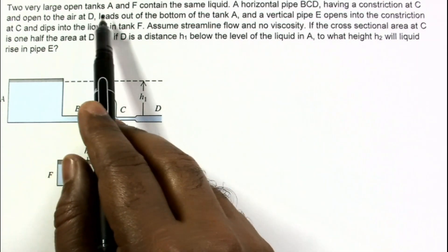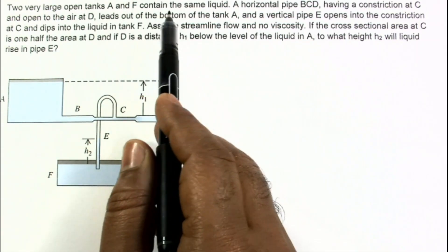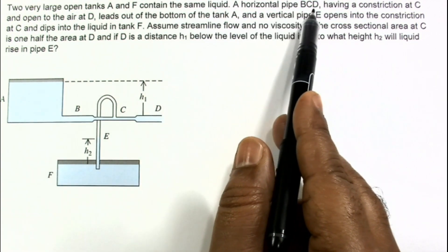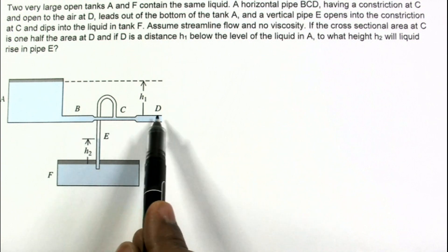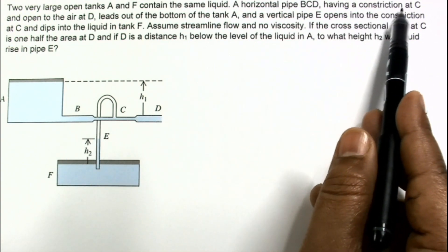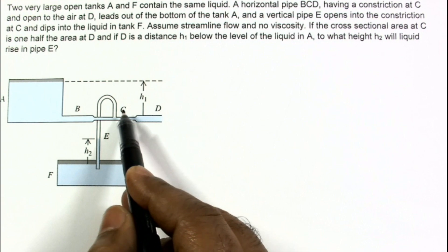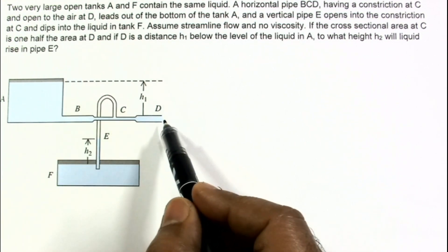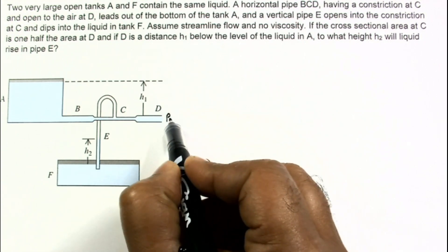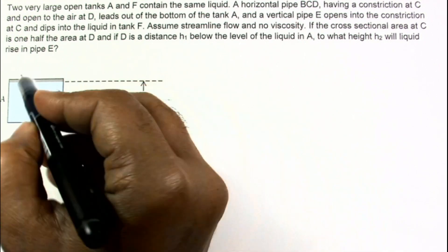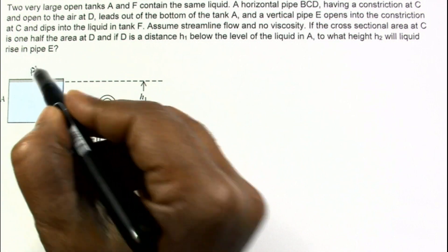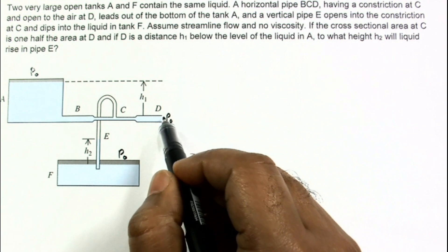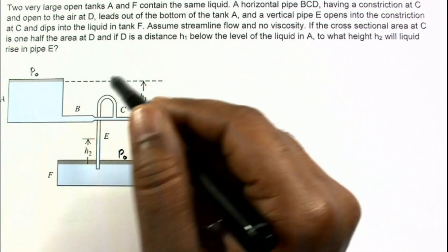This problem involves two very large open tanks A and F containing the same liquid. A horizontal pipe B-C-D has a constriction — a small cross-sectional area — at C, and is open to air at D. That means the pressure at D is atmospheric pressure. Pressure at A is also atmospheric pressure; both tanks are open to the atmosphere.